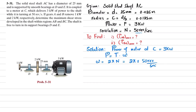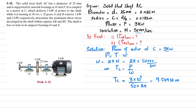Power at point C is 3 kilowatts, so from here we get torque at C equal to power divided by angular velocity: T_C = 3×10³ divided by 50×2π. When you calculate this, you get torque at point C equals 9.549 newton-meters.